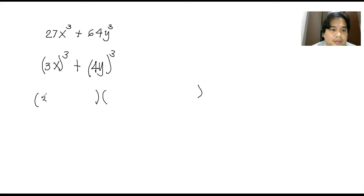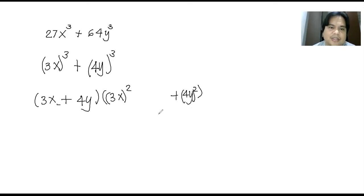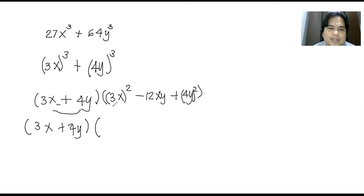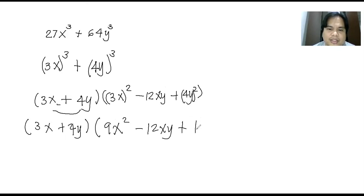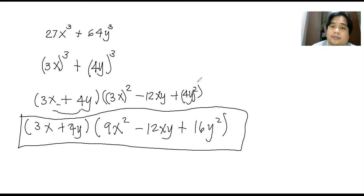For the first factor, just copy the bases. For the second factor, the first term is the square of 3x — so this becomes 9x squared. The last term is the square of the second term of the first factor, 4y — so that's 16y squared. This one is always plus. For the middle, the middle term is always minus if the first factor is plus. The middle term is the product of these two: 3x times 4y, you get 12xy. So this one is (3x + 4y)(9x squared minus 12xy plus 16y squared). That is already your factored form.